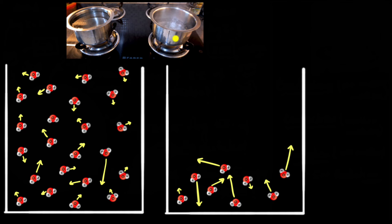Here's something to think about: if you compare this vessel of water with the ocean, you'd find the ocean has way higher thermal energy. But this water in your kitchen is at a higher temperature, because its average kinetic energy is higher than that of the ocean. That's incredible, isn't it?